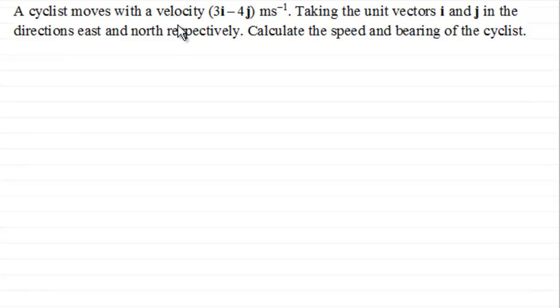I've got here that a cyclist moves with a velocity of 3i minus 4j meters per second. And taking the unit vectors i and j in the directions east and north respectively what we've got to do is calculate the speed and the bearing of the cyclist.